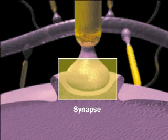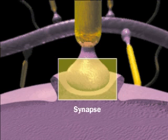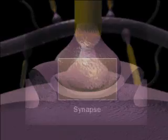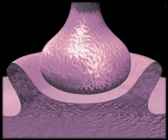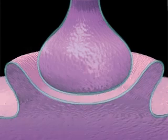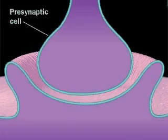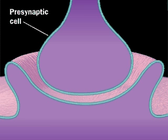At a chemical synapse, a neurotransmitter molecule, such as acetylcholine, communicates a signal from one neuron, the presynaptic cell, to another, the postsynaptic cell.